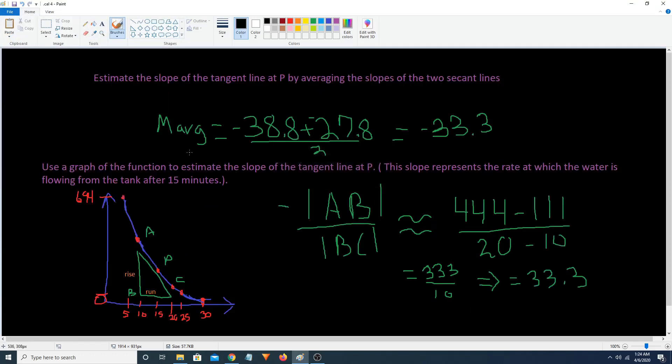So let's go back over here. And so here's our average. All we got to do is add these together. So that's negative 38.8 plus negative 27.8. And then divide it by 2. And this gives us an approximation of what we think the tangent line is for P.